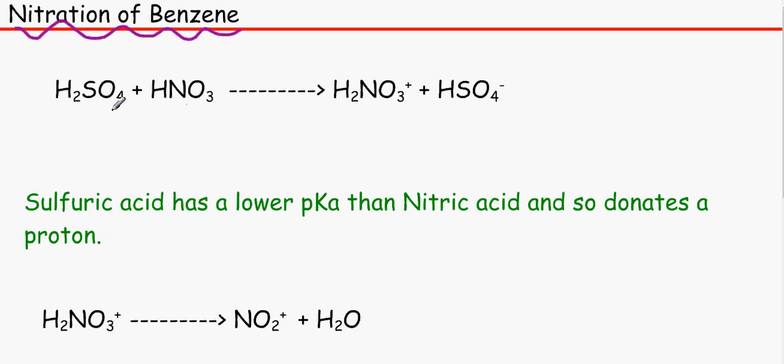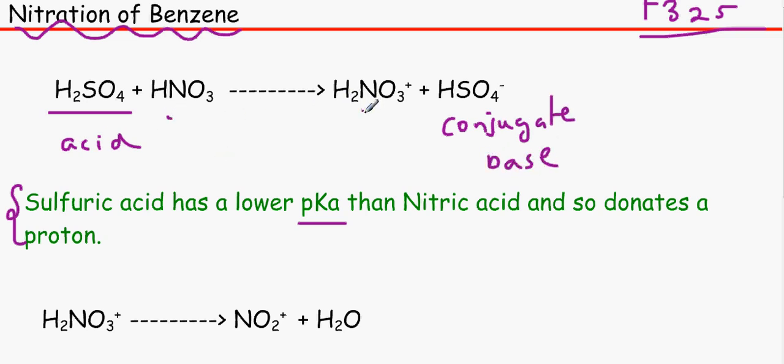These two are both acids but, you'd be wondering which one gives off the protons. But sulfuric acid has a lower pKa, the minus logarithm of the dissociation constant, than nitric acid. Obviously don't worry about this if you haven't come across it before. So this will lose the proton because remember acids are proton donors. So this is an acid and this would be the conjugate base. And so would this be the base and that would be the conjugate acid.